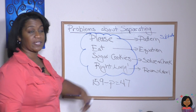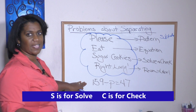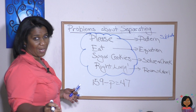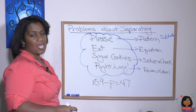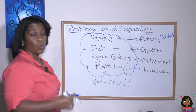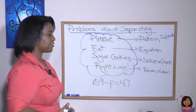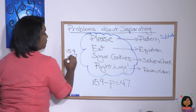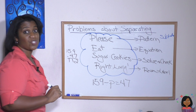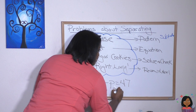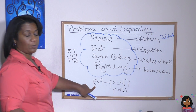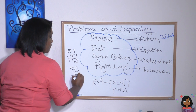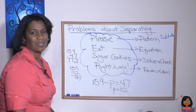Now we move on to sugar cookies, which is solve and check. So 159 minus P — a missing number in subtraction means we need to look close and see what's missing. It looks like our subtrahend is missing. When the subtrahend is missing, we subtract to find the answer. 159 minus 47 gives us 112. So P is 112. I'm going to check my answer by putting it back in: 159 minus 112 gives me 47, which means it checks out.